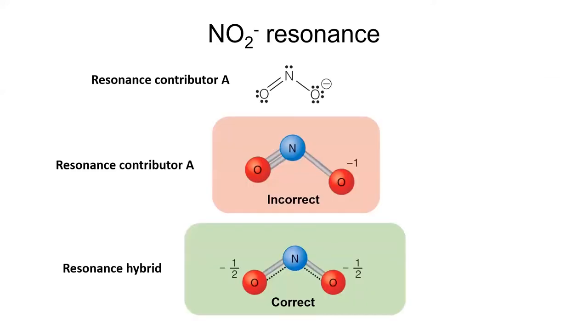I'll leave you with this slide, showing the Lewis structure and ball-and-stick models for resonance structure A. This structure does not represent the real properties of the molecule. Instead, the bottom model accurately describes the bond lengths and formal charges for this species.